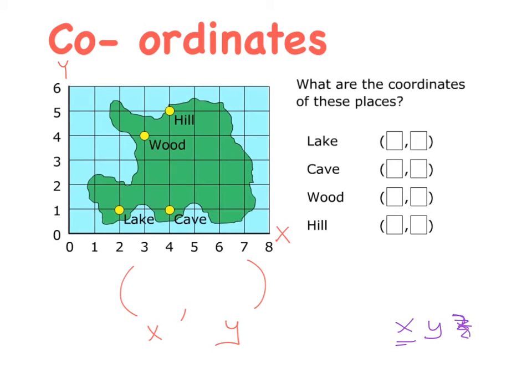So the X along the corridor, we go along as far as two. That's where the lake is. And up as far as one. So the point for the lake is (2, 1).